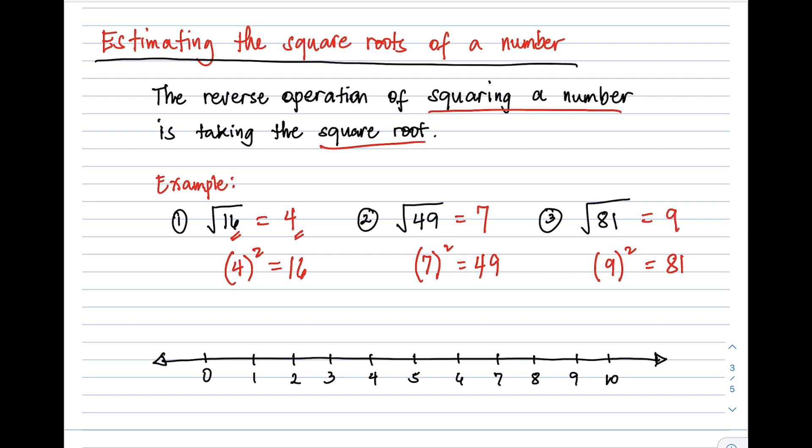Just in case you're asked to graph these on a number line, we'll plot them. We have 4, so here is our square root of 16. Then square root of 49, which is 7, is here at this point. Then square root of 81, which is 9, is here.